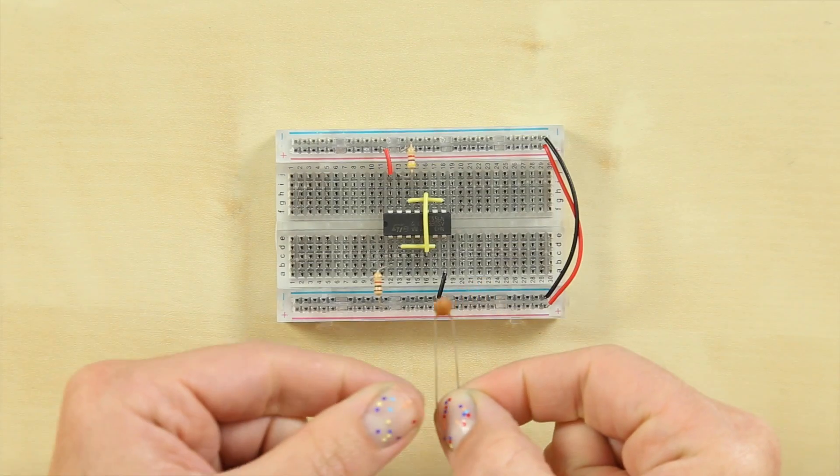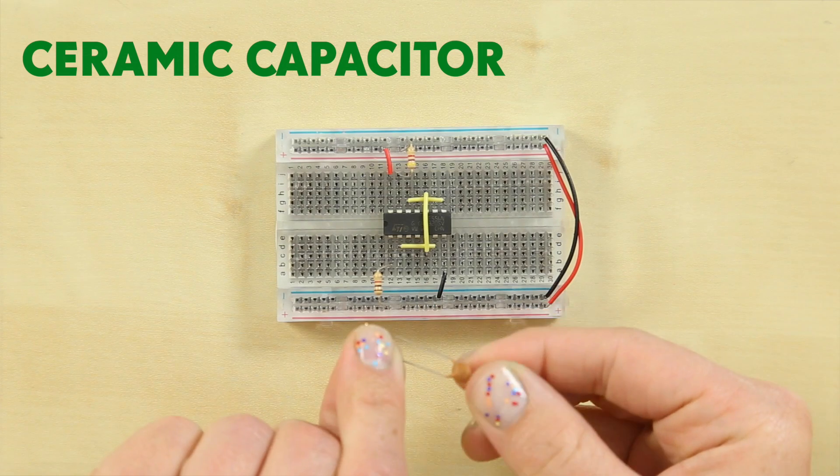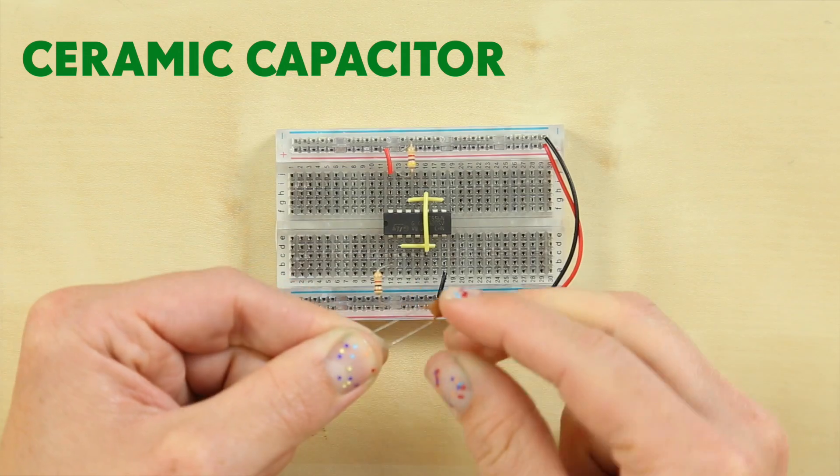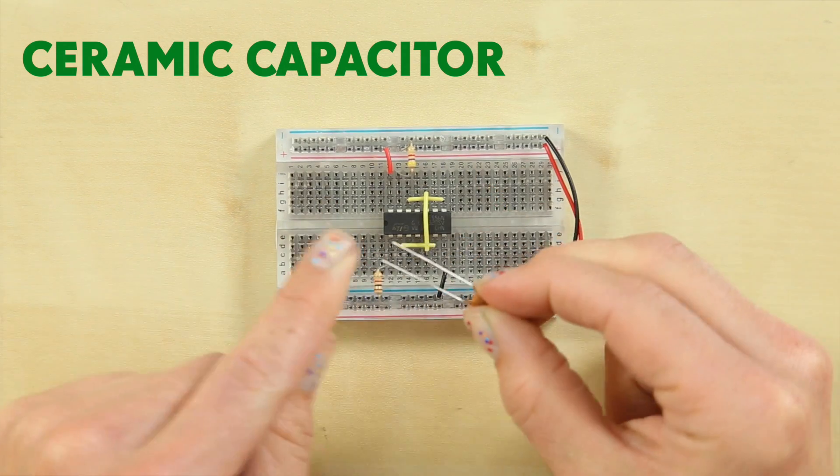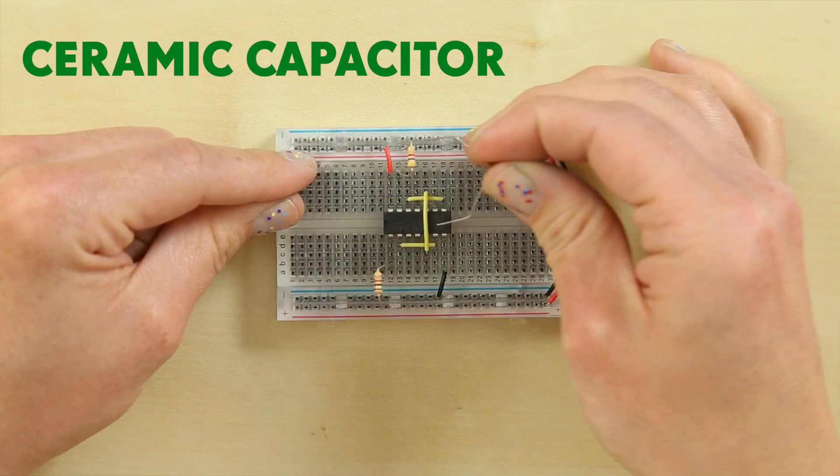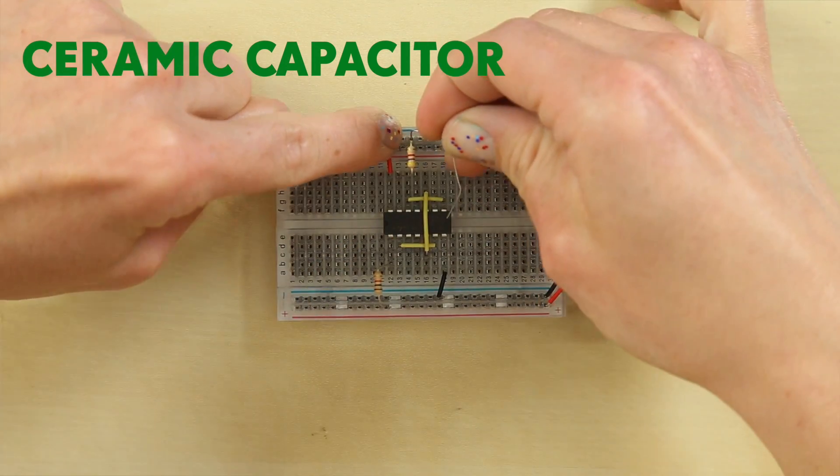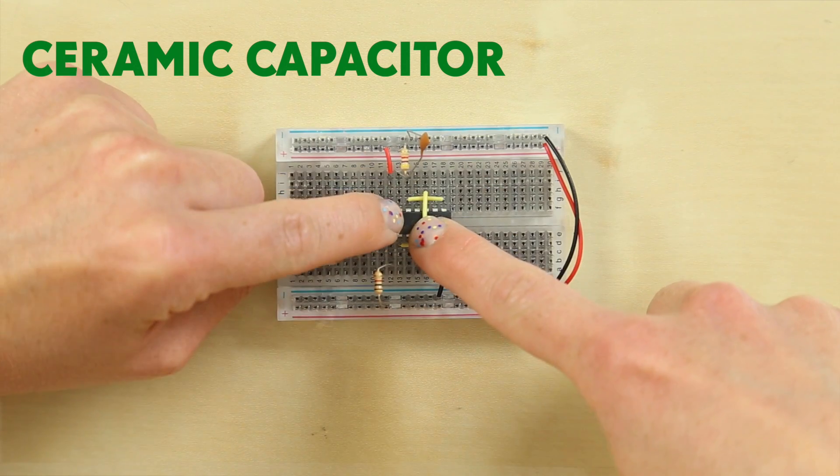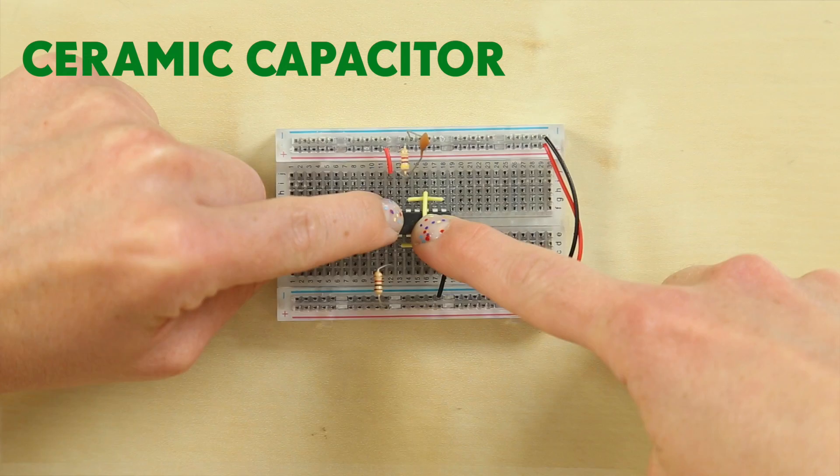The next component you'll need is your ceramic capacitor. There are two types of capacitors. The other ones we'll do later, they're the black ones. These ones are not polarized. You can tell because their legs are the same length. You want to simply pop one in the bottom ground rail, pop the other leg into row 14 or make sure it's connecting pin 12 of your IC.